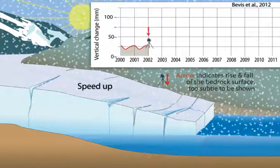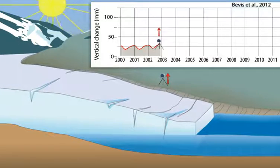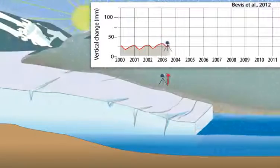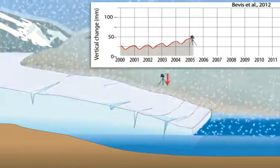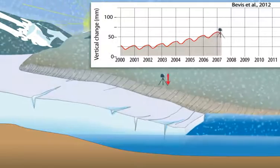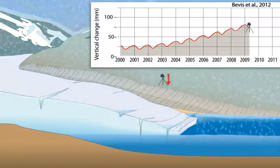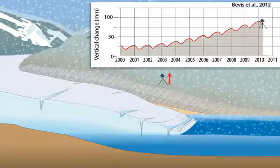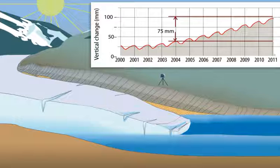In the summer of 2004, Helheim Glacier began to accelerate and thin, doubling the amount of ice discharged into the ocean. This increase in mass loss caused uplift of the bedrock surface that was measured by high-precision GPS. From 2004 to 2011, mass loss from Helheim and surrounding glaciers resulted in 75 millimeters of uplift.